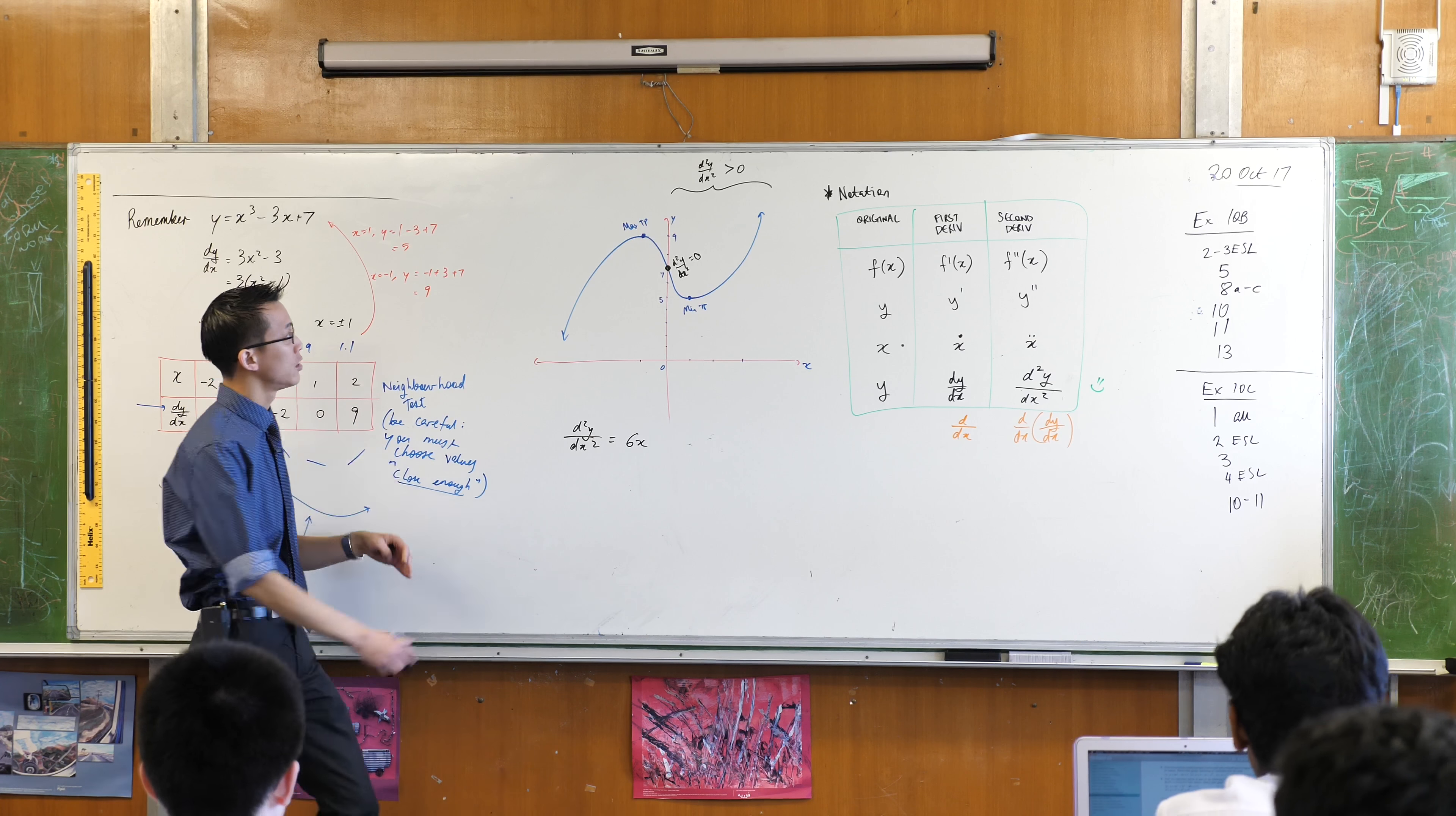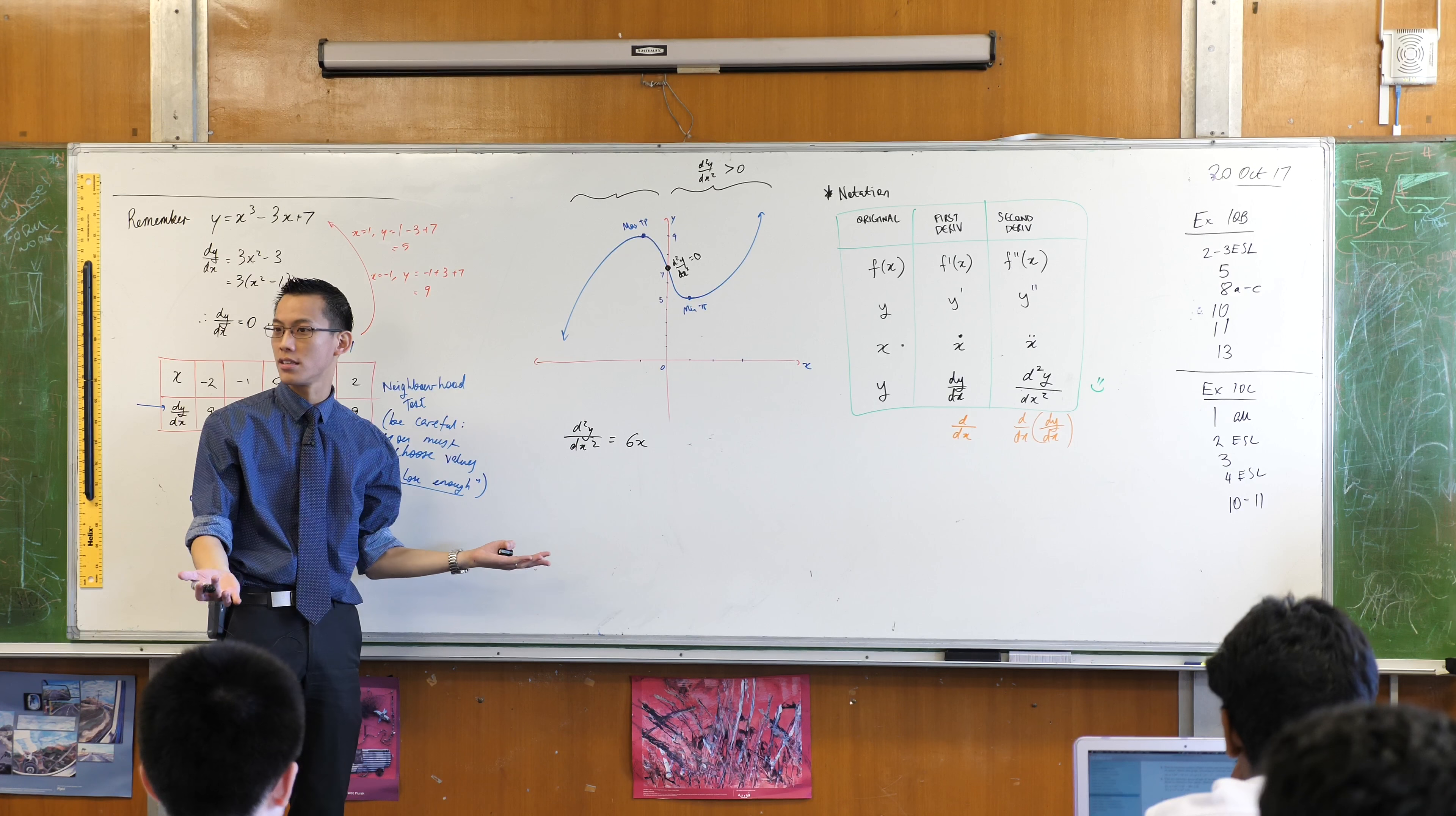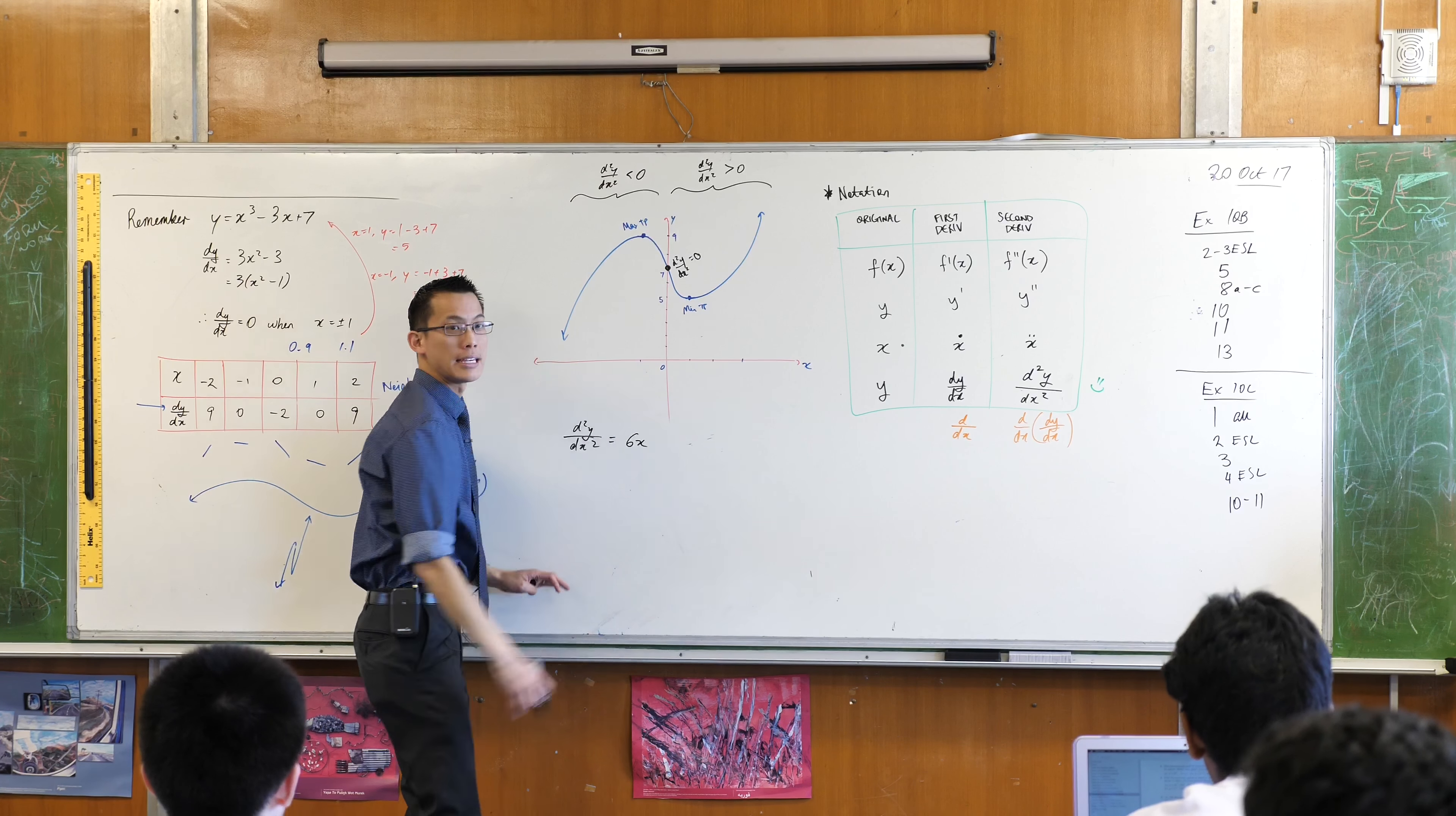What about over here on the left? What about when x is negative? When x is less than zero, six times x is also less than zero. Does that make sense? So over here, my second derivative is negative.